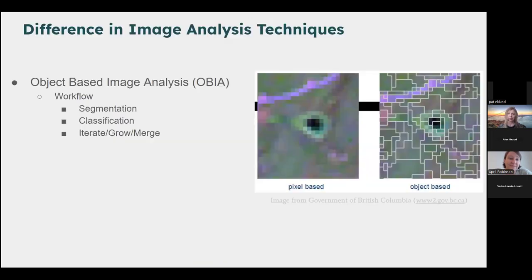The computer algorithm we developed goes back to object-based image analysis, or OBIA. Rather than taking a raster image and evaluating the classification independently for every pixel, we develop methods that group pixels together based on similar characteristics. That's where object-based analysis comes in. It's an iterative workflow of looking at segmentation of the image, classification, and then iterating through growing and merging, and continuing the process. Our algorithm is quite extensive regarding the amount of classification we're doing.